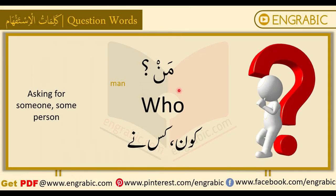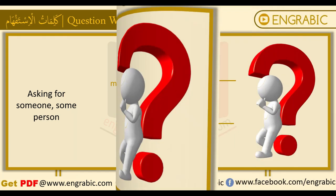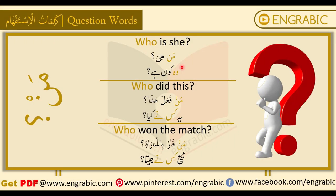Next word is 'man,' which in English means 'who.' It is used for asking about someone or a particular person. We use it when we want to know who a person is — whether referring to 'she' or 'this person.' For example, we ask about a person using 'man.'